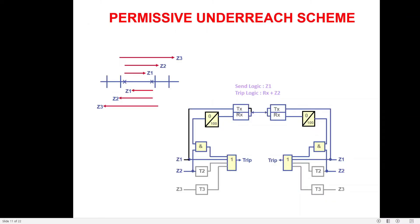In Permissive Under-Reaching Transfer Tripping (PUTT): consider the fault closer to the right-hand bus. The left-hand relay picks up in Zone 2 while the right-hand relay picks up in Zone 1. Because it is an under-reaching scheme, Zone 1 sends the carrier signal. The right-hand relay issues a trip command and sends the carrier to the left-hand end. Here, unlike in Direct Transfer Tripping, the carrier is not connected directly to tripping — instead it goes through an AND gate that checks Zone 2 pickup.